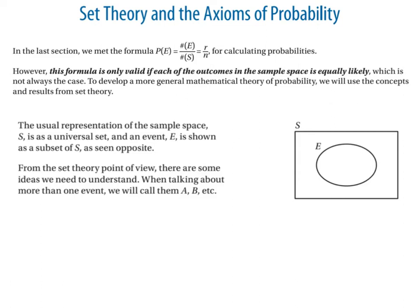In this video we're going to look at set theory and the axioms of probability. To recap, in the last section we looked at the probability of an event being the number of favourable outcomes over the total number of outcomes to calculate probability. This is only valid if the outcomes in the sample space are equally likely, which obviously isn't always the case in real life. So to develop a more general mathematical theory of probability, we're going to use concepts and results from set theory.